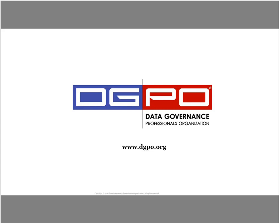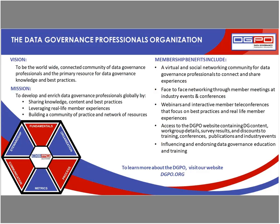A group of individuals are working on expanding our best practice information for six areas: stewardship, fundamentals, organization, process, metrics, and communication — shown at the bottom of this graphic. If you'd like to learn more about the Data Governance Professionals Organization, please visit our website at dgpo.org.